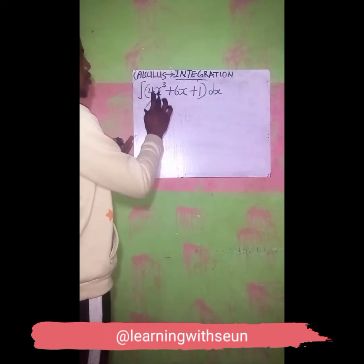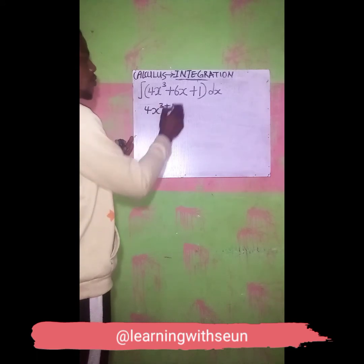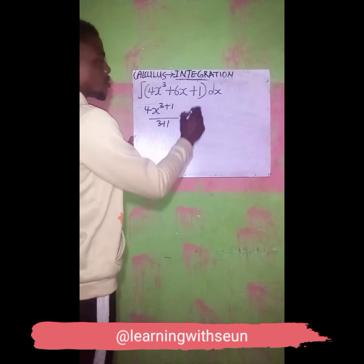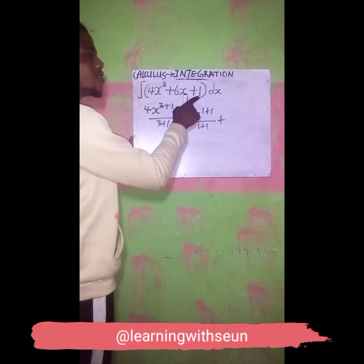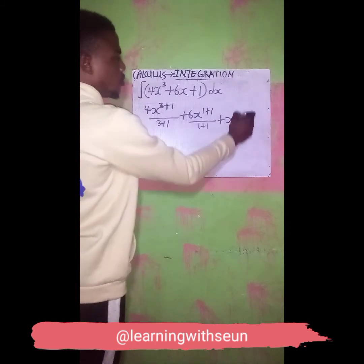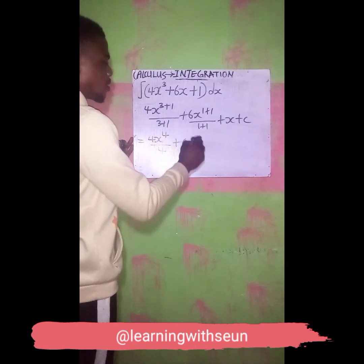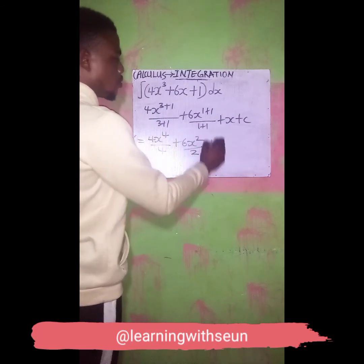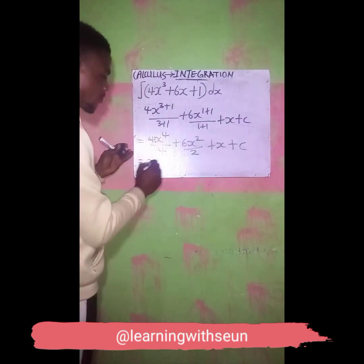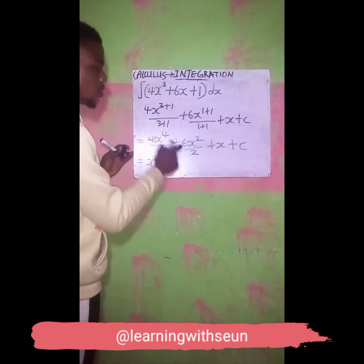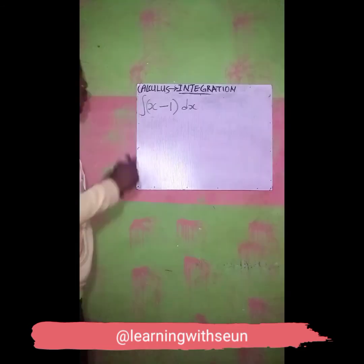If I integrate 4s cubed plus 6s plus 1, I'm going to say: 4x raised to power 3 plus 1 over 3 plus 1, plus 6s raised to power 1 plus 1 over 1 plus 1, plus if I integrate 1 it will give me x, plus C. From here: 4x raised to power 4 over 4, plus 6s raised to power 2 over 2, plus x plus C. So the final answer is: 4 cancels 4 giving s raised to power 4, plus 2 cancels 6 giving 3s squared, plus s plus C.